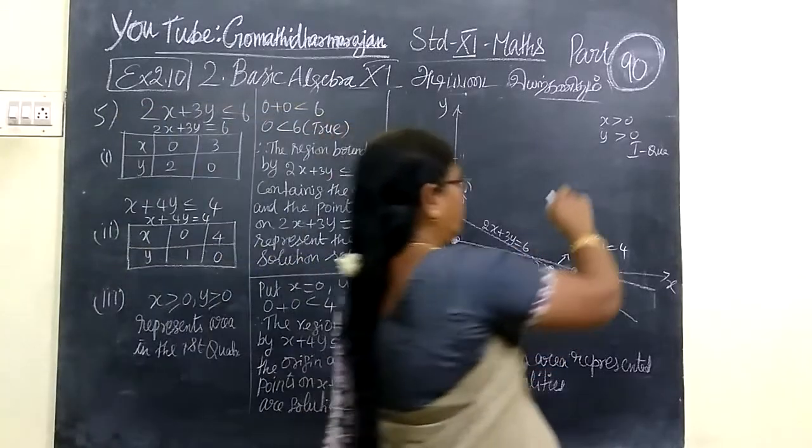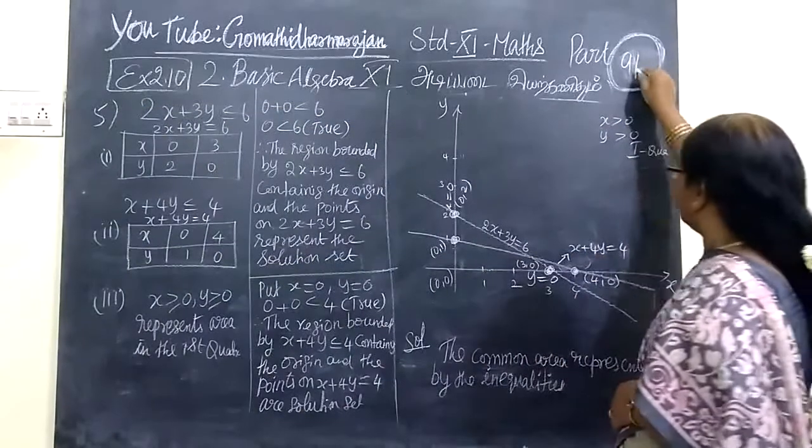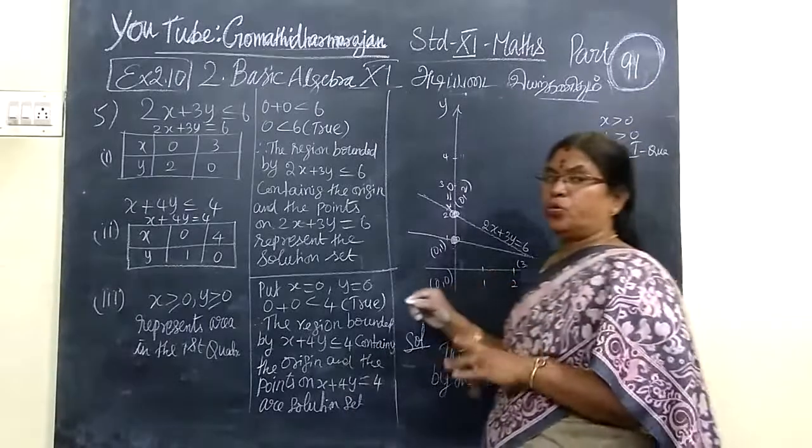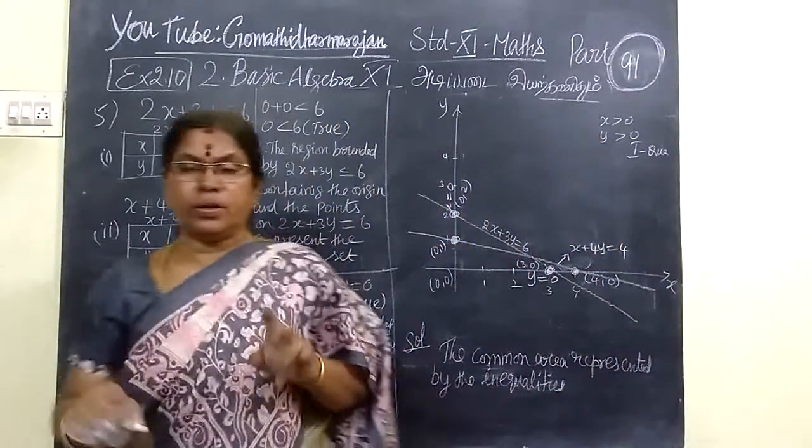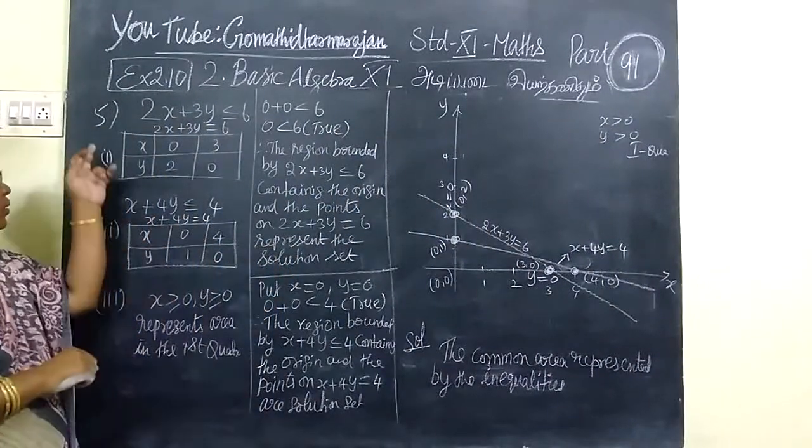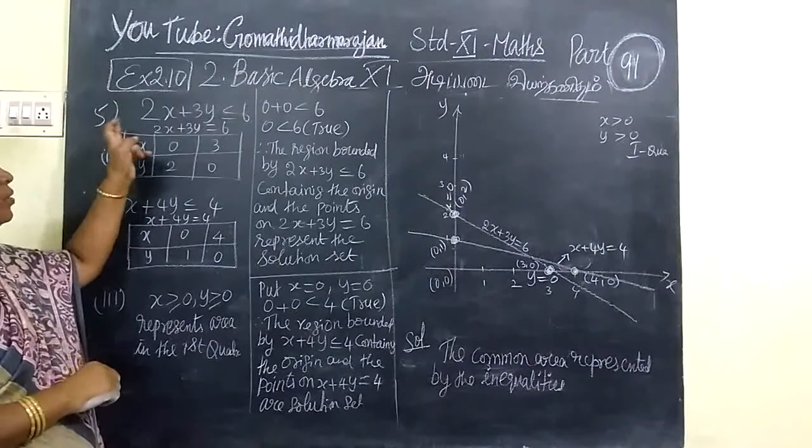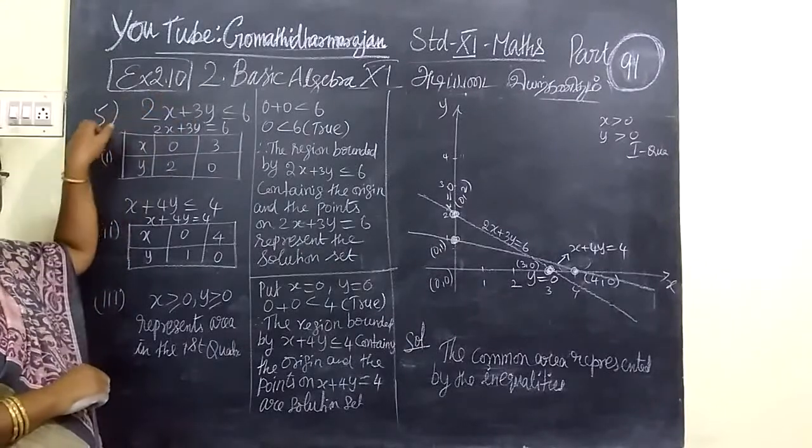So, coming to the next one and this is part 19-1. F is 2.10 and this is for general pass. Question number 5. SSI 2.10. Question number 5.